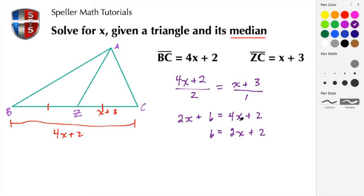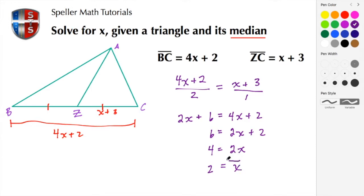I'm left with 6 is equal to 2x plus 2, because I subtracted 2x from 4x. Then I subtract 2 from both sides to isolate 2x: 6 minus 2 is 4, leaving 4 equals 2x. Dividing both sides by 2, I get X equals 2.